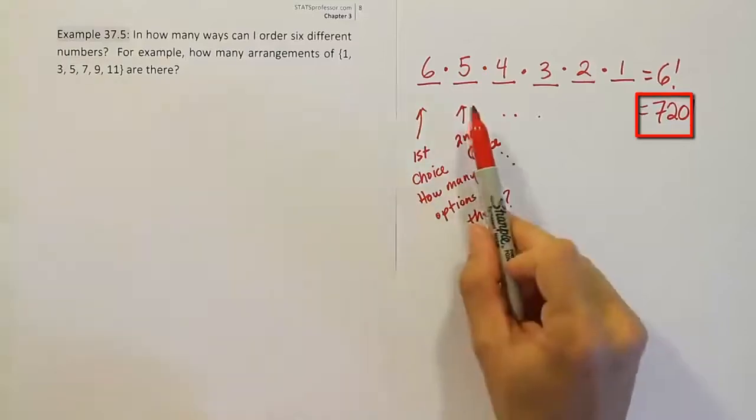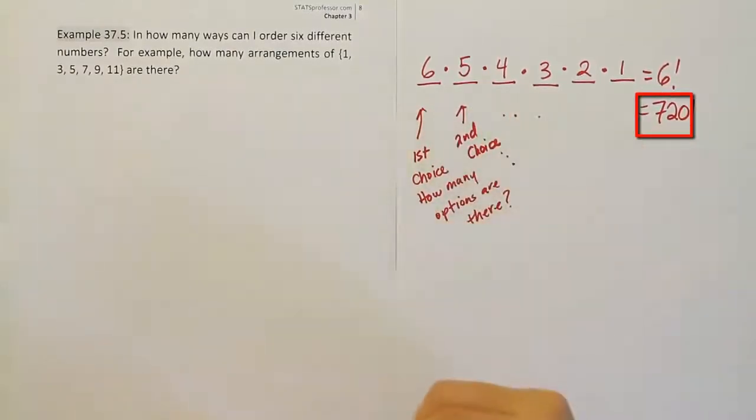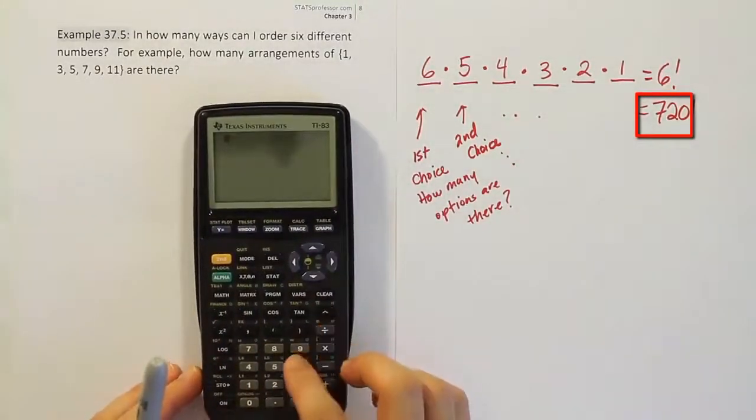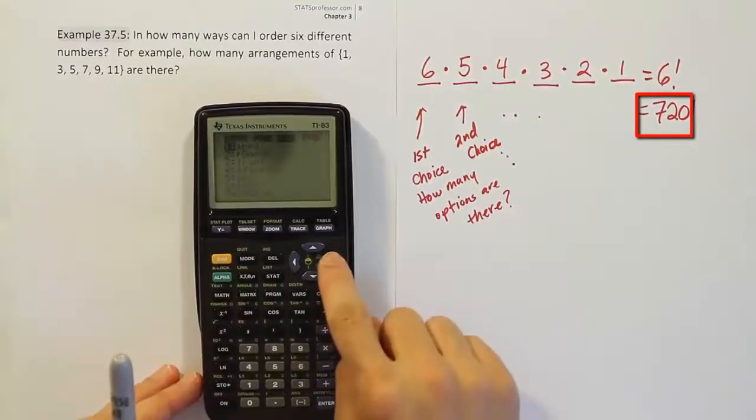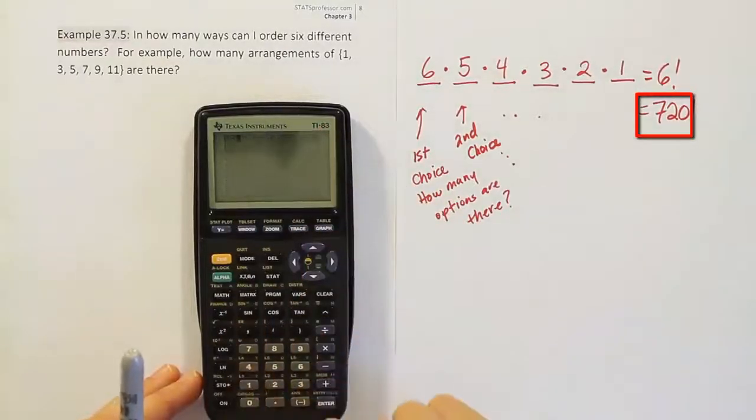Remember that five factorial is 120, so we're thinking of six times 120, which is 720. I'll just show you how to do that in the calculator very quickly. If you want to see how it's done again, we just press the six, I press the math key in this calculator, I arrow over to where it says PRB, and it's option four where the factorial symbol exists. Hit enter and I get 720.